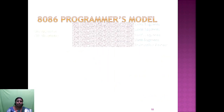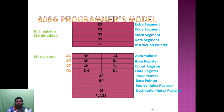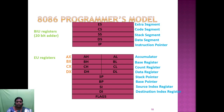Next, we are going to see about the 8086 programmer model. In the programmer model, we have the BIU register with 20-bit data containing five different segments: extra segment, code segment, data segment, stack segment, and the instruction pointer — which is used as a control register to point to the next instruction to be executed. The execution unit registers include accumulator, base register, count register, data register, stack pointer, base pointer, source index, destination index, and flags.